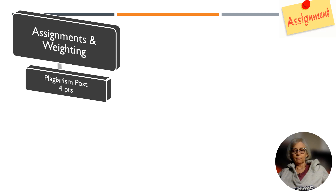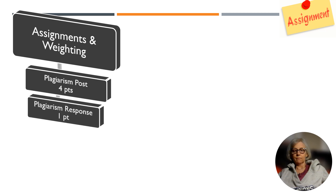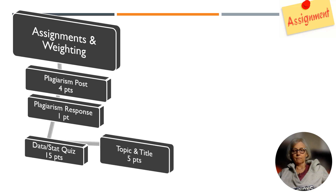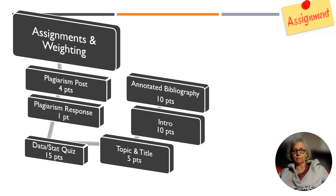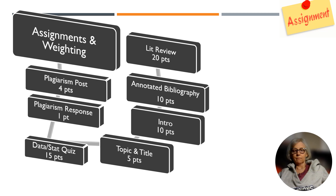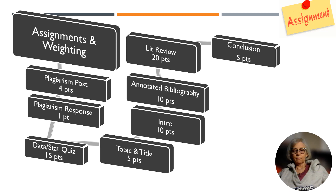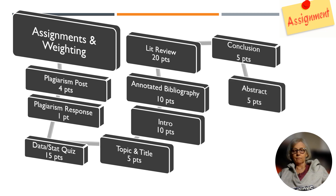The plagiarism discussion board post is worth 4 points. The plagiarism discussion board response is worth 1 point. The data and statistics quiz is worth 5 points. The topic and title for your white paper is worth 5 points. The introduction is worth 10 points. The annotated bibliography is worth 10 points. The literature review is worth 20 points. The conclusion is worth 5 points. The abstract is worth 5 points.